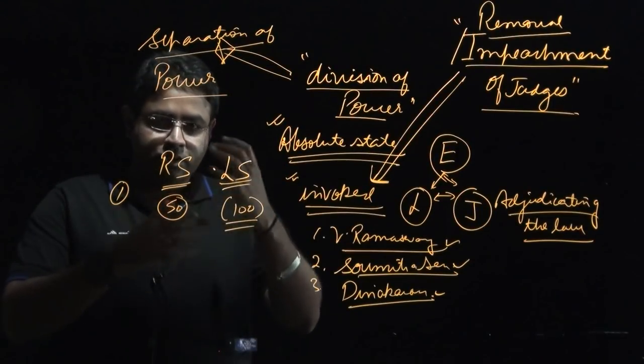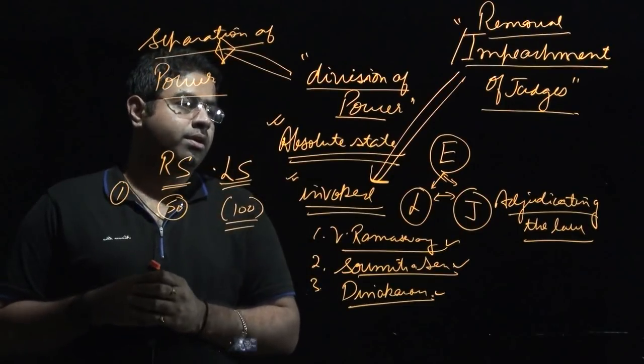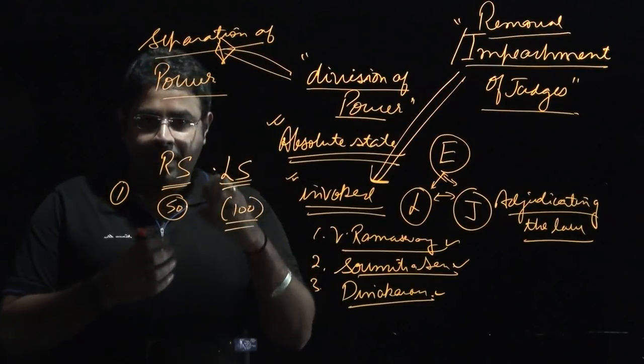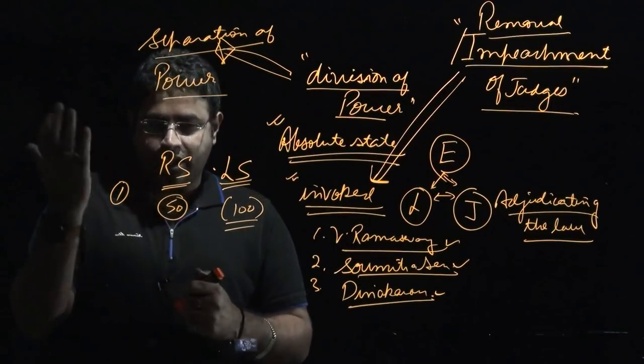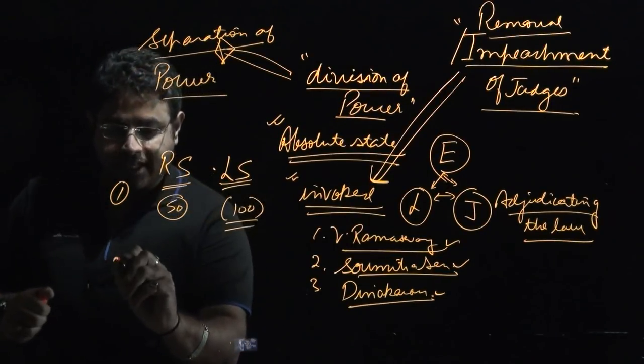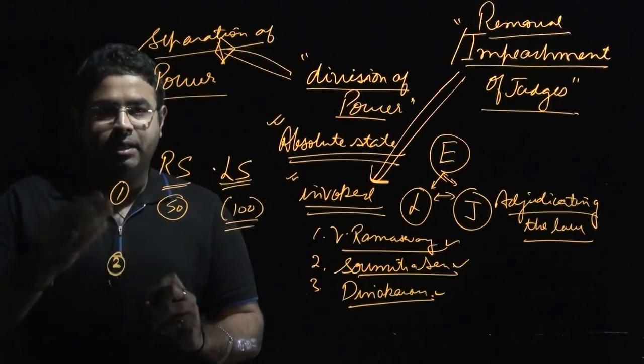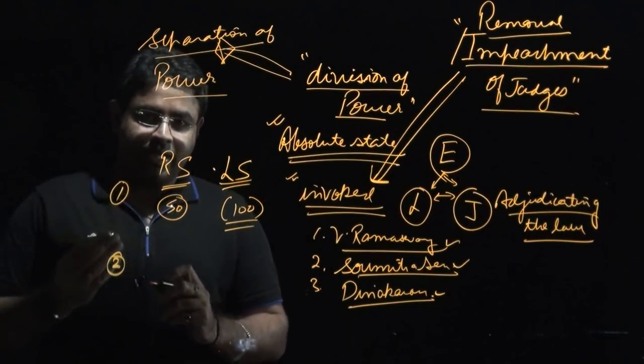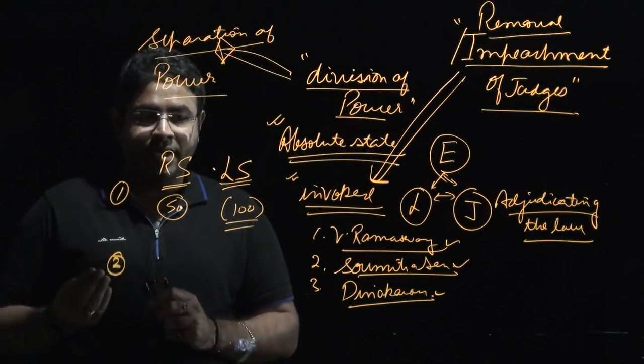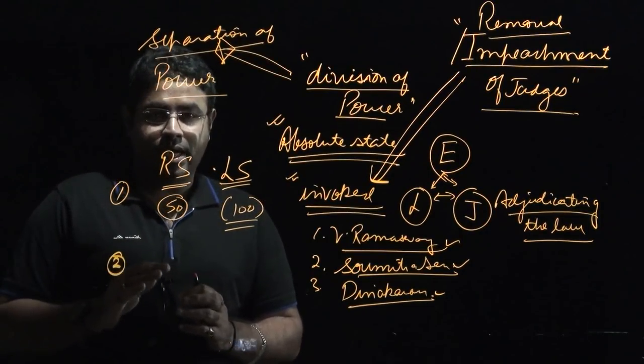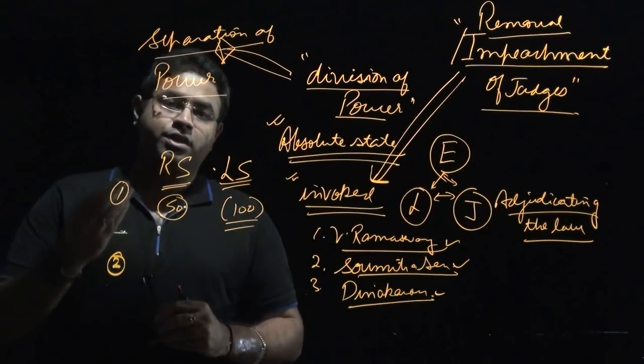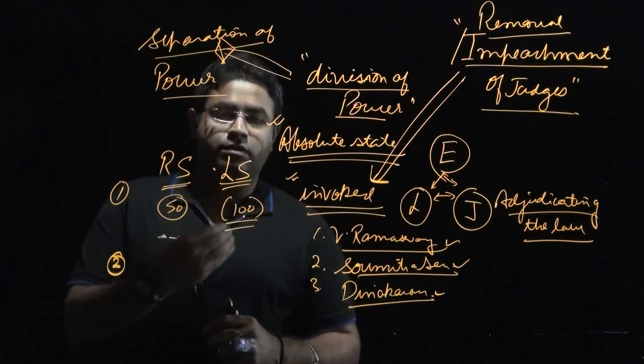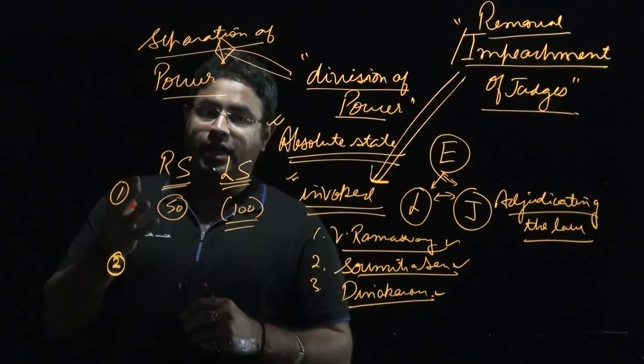The procedure of removal has deliberately been made very tough. In the first stage, you require approval. In the second stage, you require it to be passed by special majority. In the third stage, you require it to be passed from the other house, and lastly, the President will pass a resolution for the removal of the judge of the Supreme Court or of the High Court.